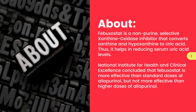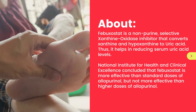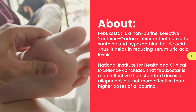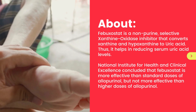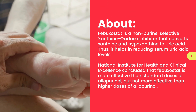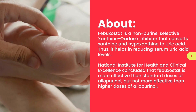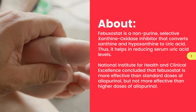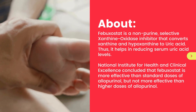Febuxostat is a non-purine, selective xanthine oxidase inhibitor that converts xanthine and hypoxanthine to uric acid. Thus, it helps in reducing serum uric acid levels.